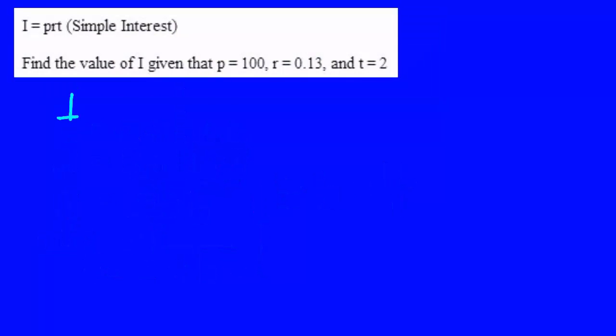Now this is an interesting formula because this formula deals with money. I equals PRT. The interest earned on money equals the principal, which is the amount of money you initially put in the bank, times the interest rate written as a decimal, times the time in years. So if we put $100 in the bank at 13% interest, and we write that as 0.13, for two years,